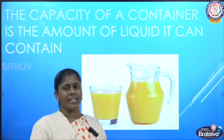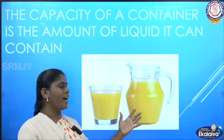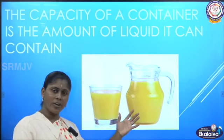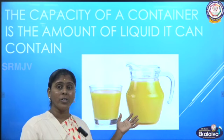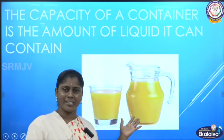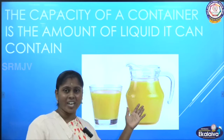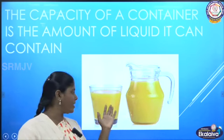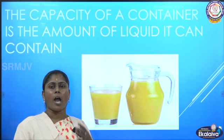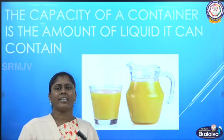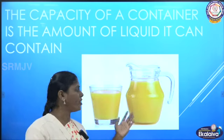First, let us see what is meant by capacity. Here, you can see a jug and a glass of orange juice. Can you guess which can hold more juice? By looking at the shape and size, you can say that this jug can hold more juice than this glass. The capacity is the amount of liquid that a container can hold — that is called the capacity of the container.